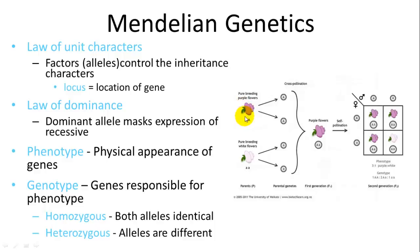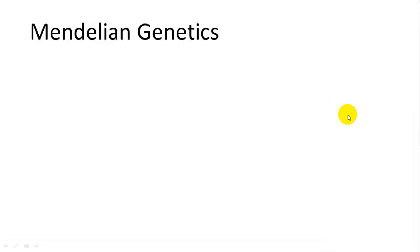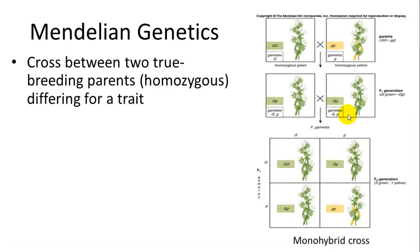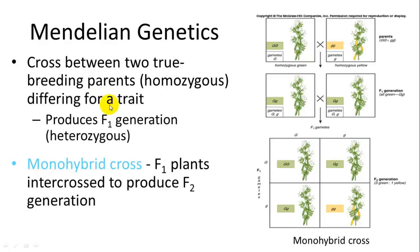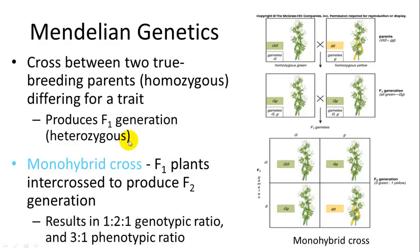For example, a pure-breeding purple flower with two dominant alleles, crossed with a flower with two recessive alleles, gives a heterozygote where the dominant is expressed and the recessive is not. In a monohybrid cross with two true-breeding homozygous parents producing a heterozygous F1 generation, the F2 generation results in a 1 to 2 to 1 genotypic ratio and a 3 to 1 phenotypic ratio.